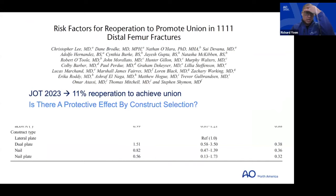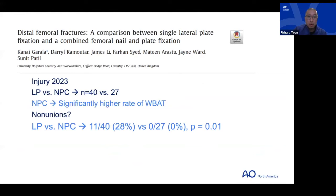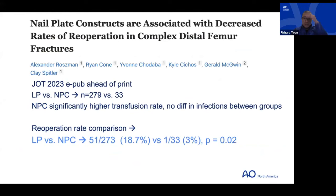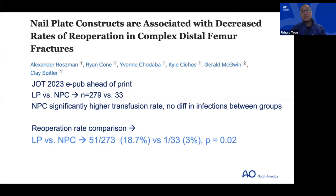A 2023 paper by Chris looking at over 1,000 distal femur fractures sought to find a protective effect for dual implants — the numbers may not have been sufficient to reach significance. Another paper in Injury compared isolated lock plating versus nail-plating with small numbers — everyone in the nail-plate group had significantly higher weight bearing and no failures or non-unions comparatively. A comparative series from Clay's group showed lower re-operation and failure rates with nail-plate versus lateral lock plate alone.